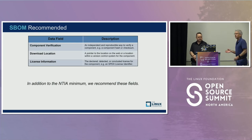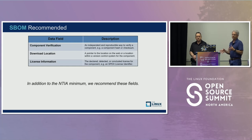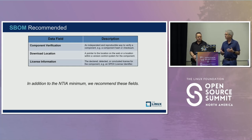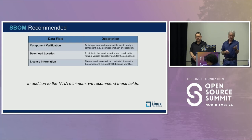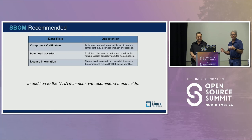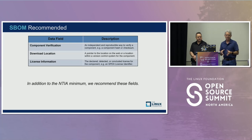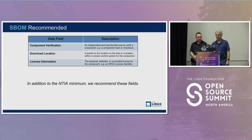Jeff and I would like to recommend a couple of additional fields beyond the minimum. One is some way of verifying the component — a hash or some mechanism so you can confirm the component matches what's described in the SBOM. Download location — where did they actually get it from? Again, helpful to verify it's the right thing. And then license information: beyond identification of the package, communicating the license can be really helpful to your downstream users.